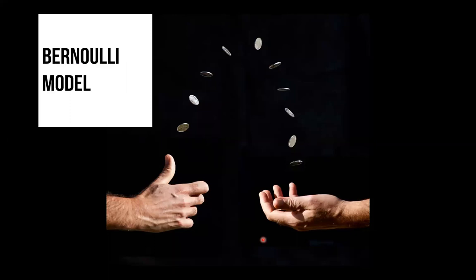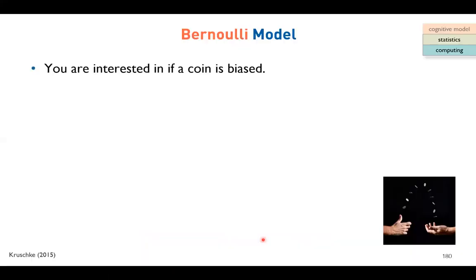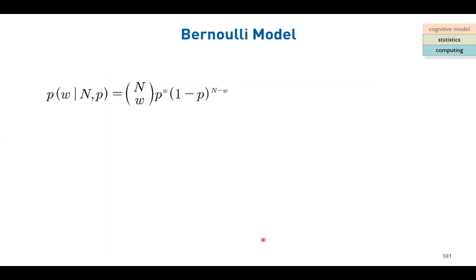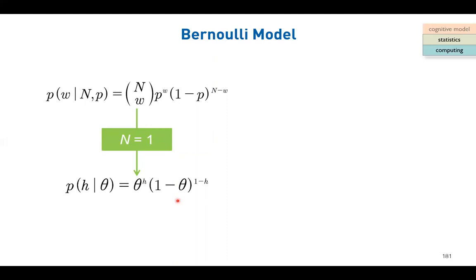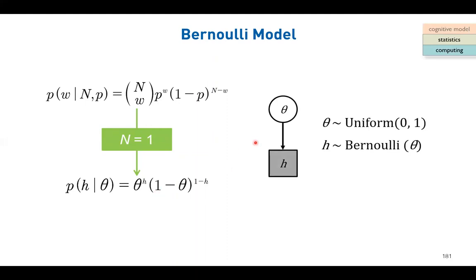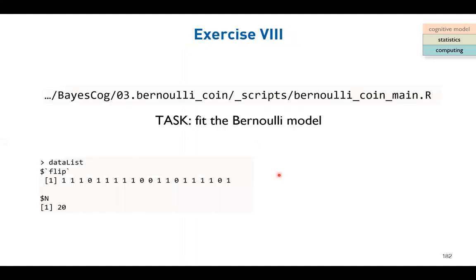The Bernoulli model is a special case of the binomial model. When capital N equals one in the binomial formula, it reduces to the Bernoulli form. The exercise is to model the unknown parameter theta using the globe example framed as coin flipping. I encourage you to do it at home afterwards - there is a folder starting with '03' where you can fit the model. The data shows 20 experiments where ones and zeros indicate heads and tails.